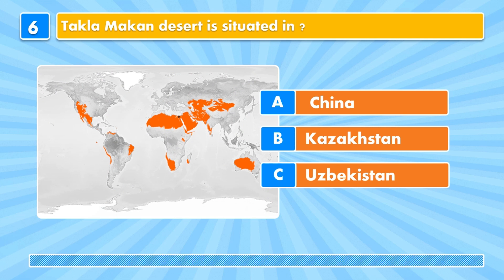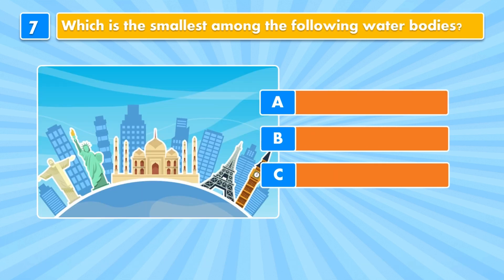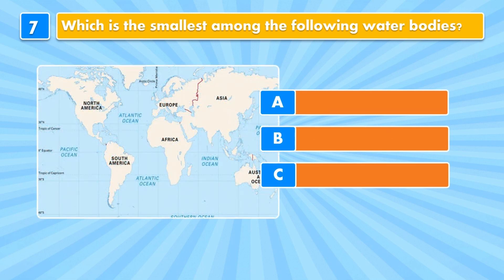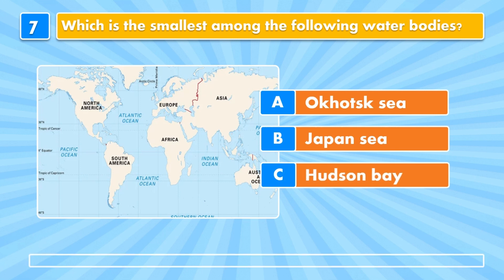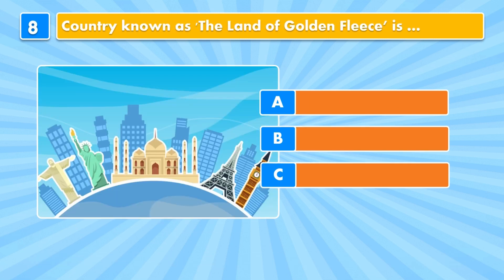Question seven: which is the smallest among the following water bodies — Sea of Okhotsk, Sea of Japan, or Hudson Bay? Answer: Sea of Japan.